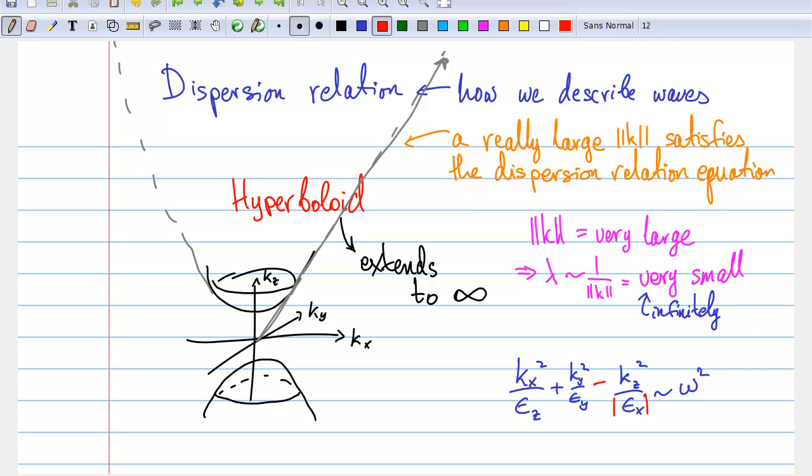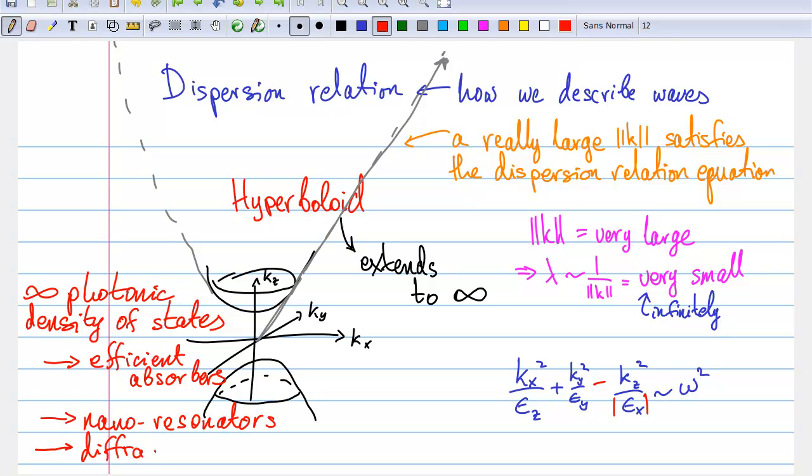Because we can make the wavelength inside the material as small as we like, optical devices can be made much smaller than ordinarily allowed. In addition, the infinite nature of the dispersion hyperboloid implies an infinite photonic density of states in these materials. This means that they can function as extremely efficient absorbers, they can also be used for nanoscale waveguides and resonators, and they can enable diffraction-free focusing and imaging.